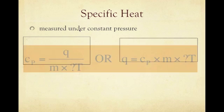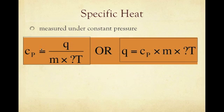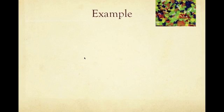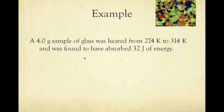Since specific heat is measured at constant pressure, we get the equation Q = CmΔT, where Q is heat, C is specific heat, m is mass, and ΔT is the change in temperature. You can also rearrange it as C = Q divided by mass times change in temperature.